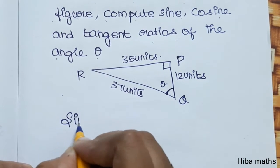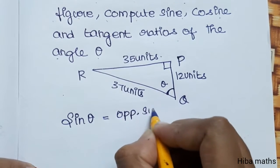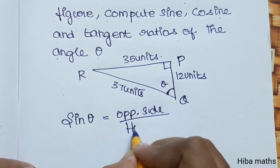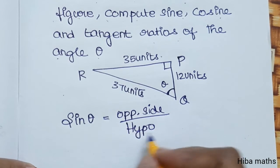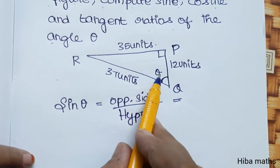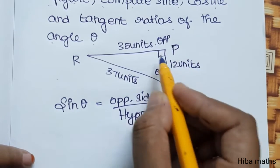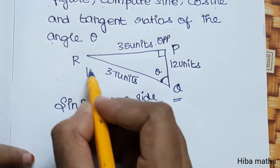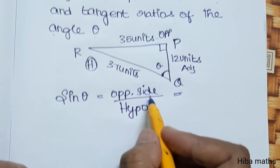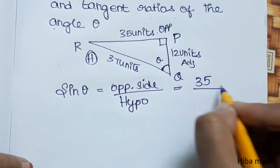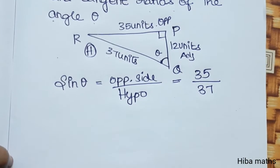First is the sine value. Sine theta is opposite side by hypotenuse. Sine is opposite side by hypotenuse. With respect to theta, this is the opposite side and the whole is hypotenuse. The opposite side is 35 and hypotenuse is 37, so sine theta equals 35 by 37.